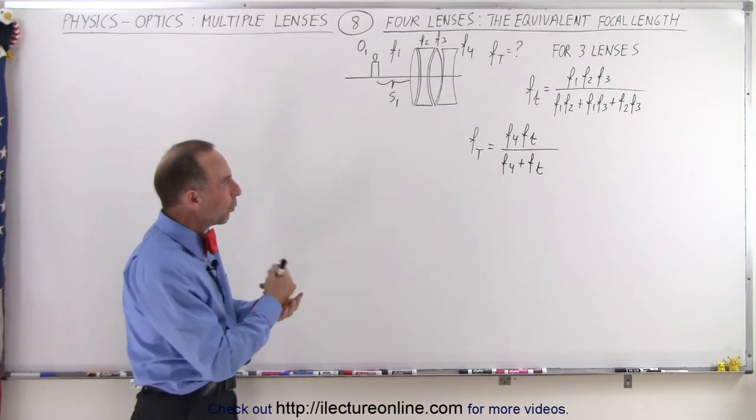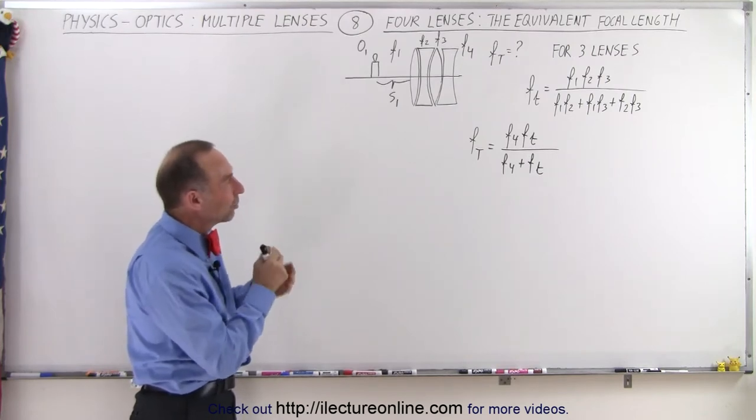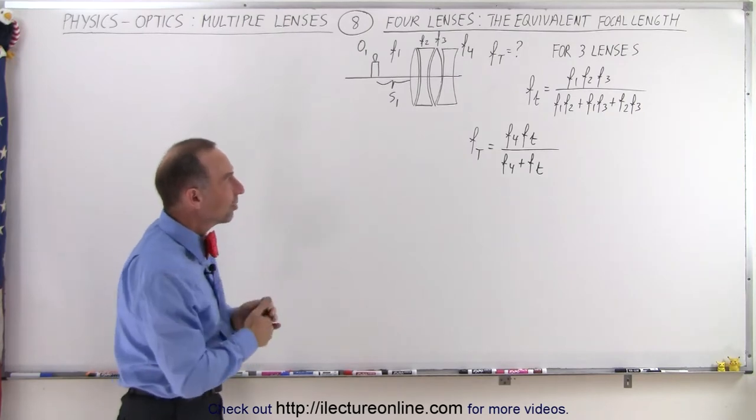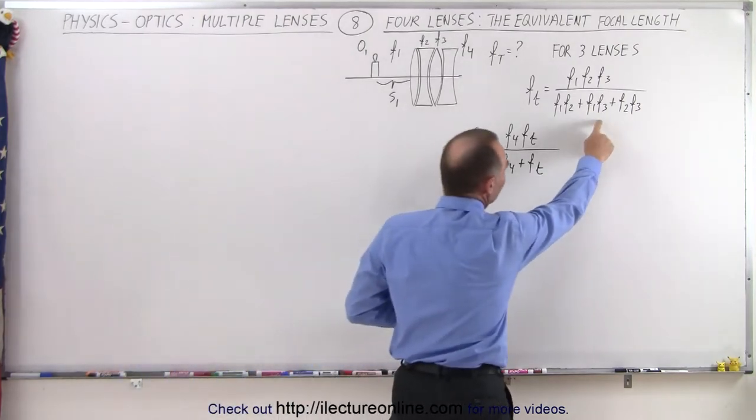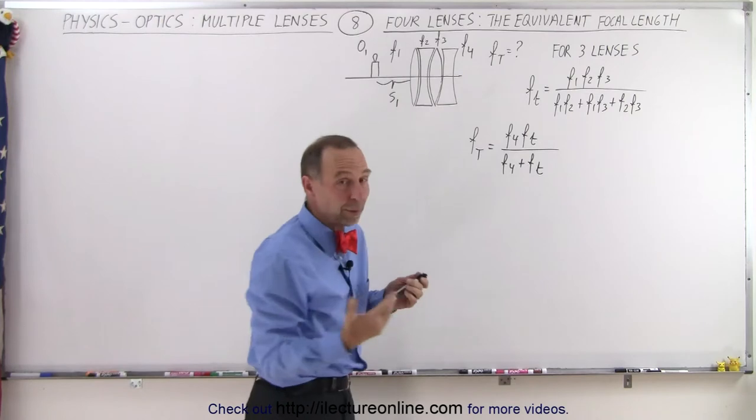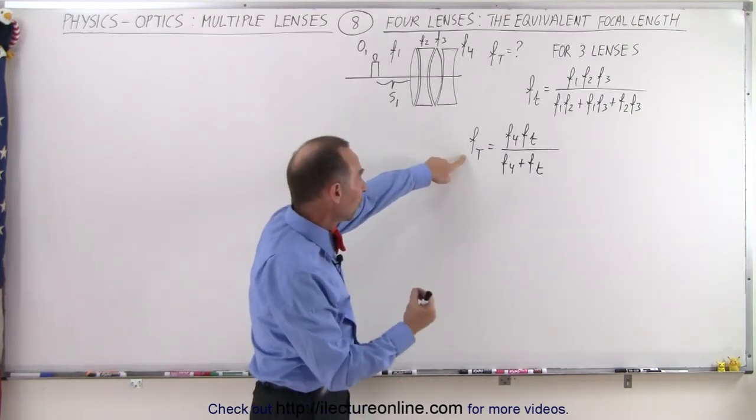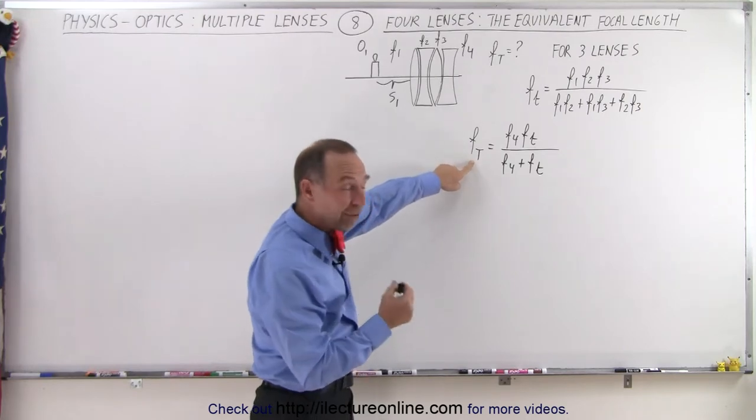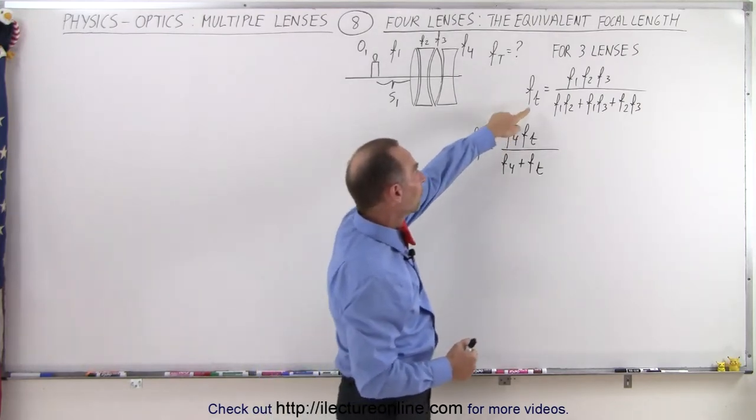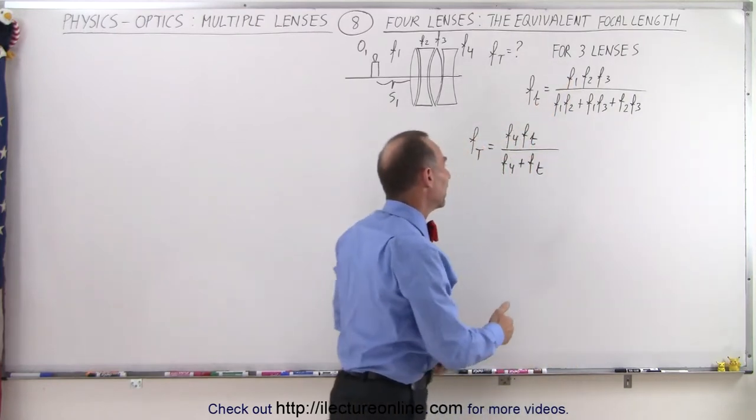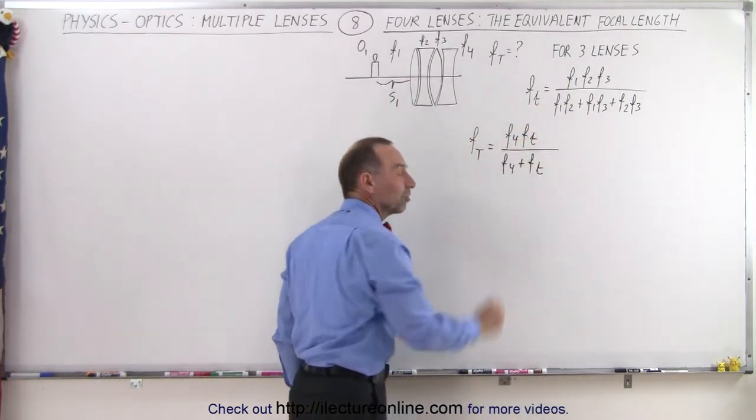Let's now amp it up to four lenses to see what the equivalent focal length will be for a four-lens system, now that we know what it looks like for a three-lens system. The way we're going to approach this is we'll have the total equivalent focal length for four lenses written as F with a capital T, where F with a small t represents the focal length for a three-lens system, and simply use the product over the sum method here.